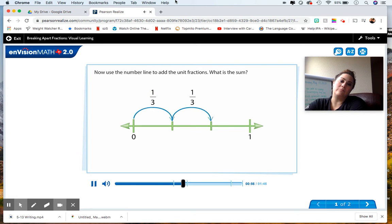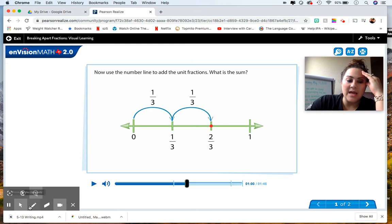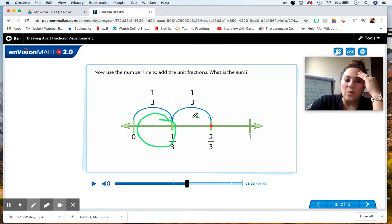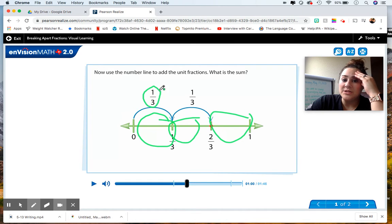Now use the number line to add the unit fractions. What is the sum? Okay, so I want to show you. So our unit fractions are, remember, how many equal pieces our number line or strip is divided into. So in this case, our number line is divided into one, two, and three. It's divided into thirds.